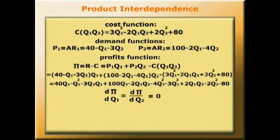So we partially differentiate for output Q1 and set that to 0. The partial derivative dπ/dQ1 equals 40 - 2Q1 - 3Q2 - 2Q2 - 6Q1 + 2Q2 equals 0.